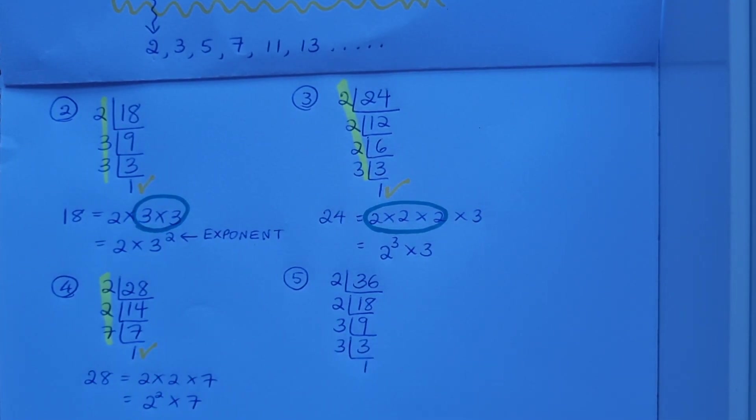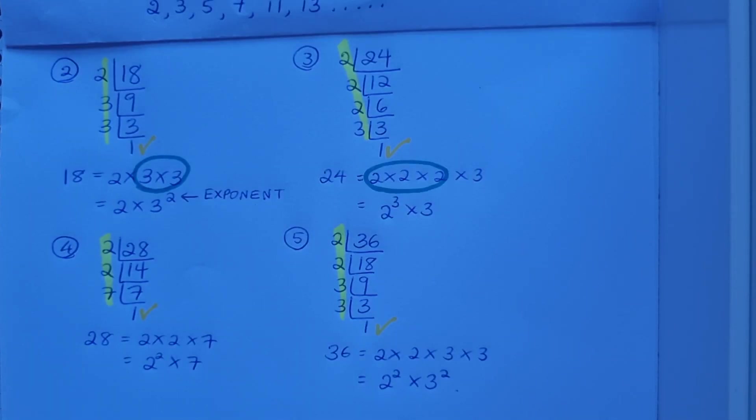What will go into 3? 3 will go into 3 just the once. I got to 1, I'm done. There are my prime factors highlighted. So 36 is 2 by 2 by 3 by 3, or 2 squared by 3 squared.